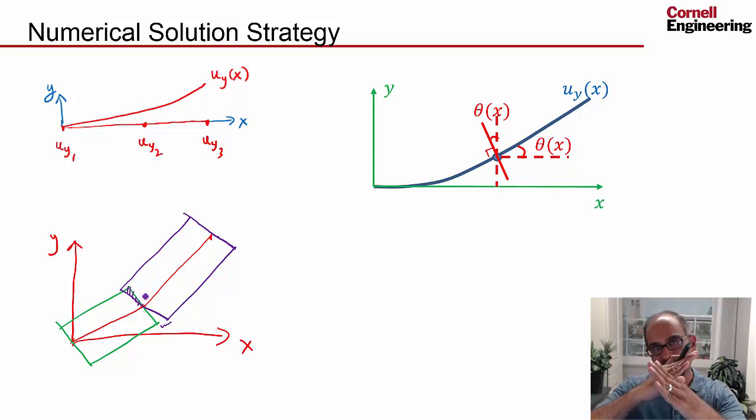So the cross-section cannot do this. What it does is both parts of the cross-section have to rotate by the same amount, and so what you have to do is you have to avoid these slope discontinuities.